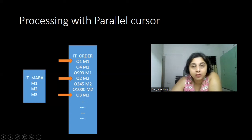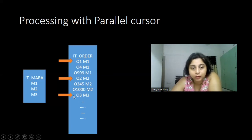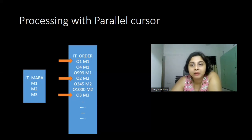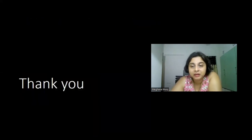Because of the parallel cursor and the READ statement that retrieves the index of the row matching the criteria, the efficiency of the program improves — you skip previous record iterations and start directly from the matching record number, making your ABAP code more efficient. Thank you for watching. Bye.